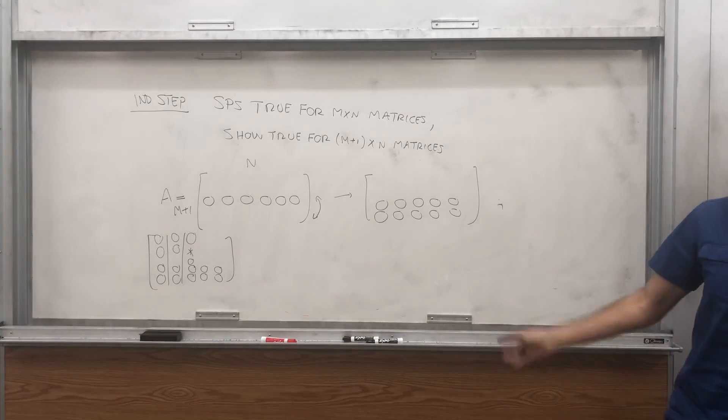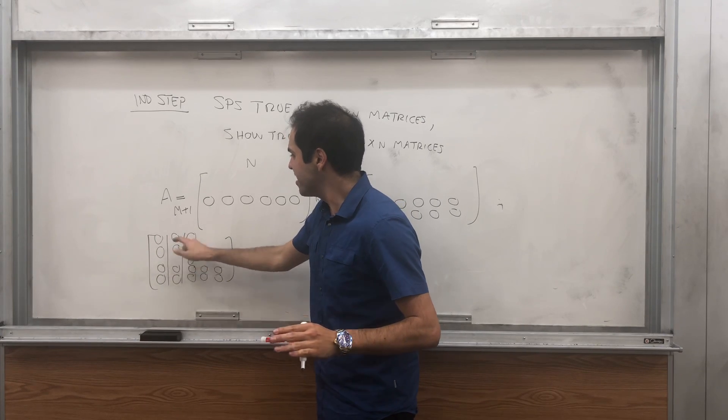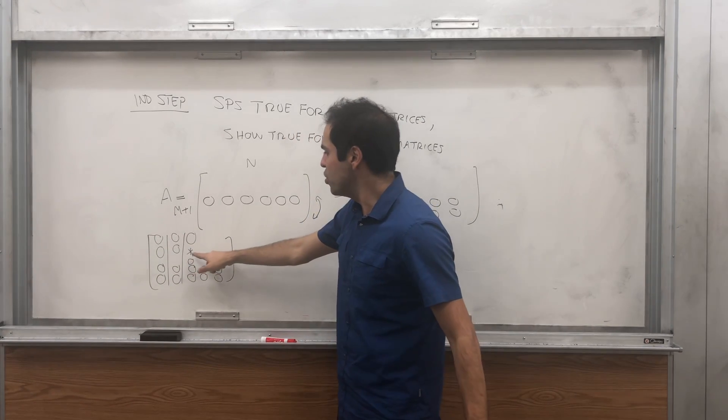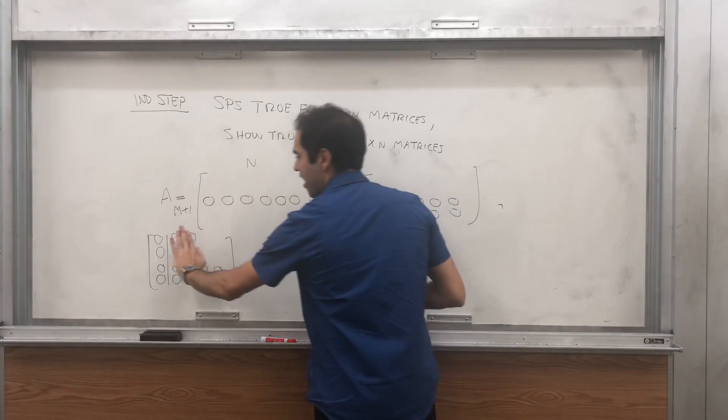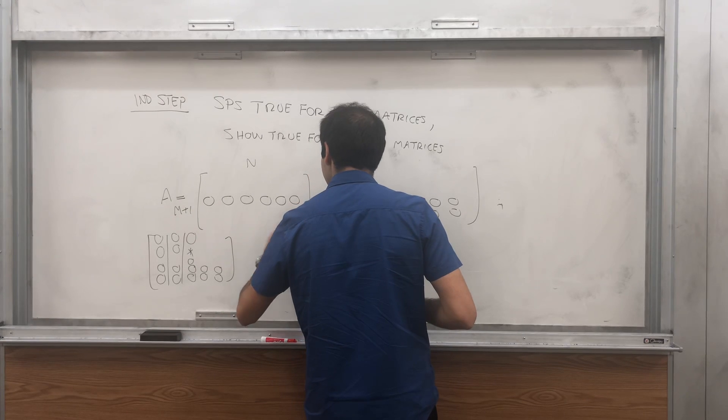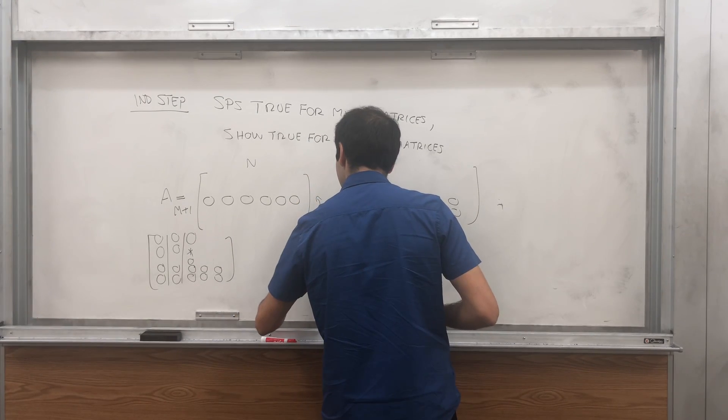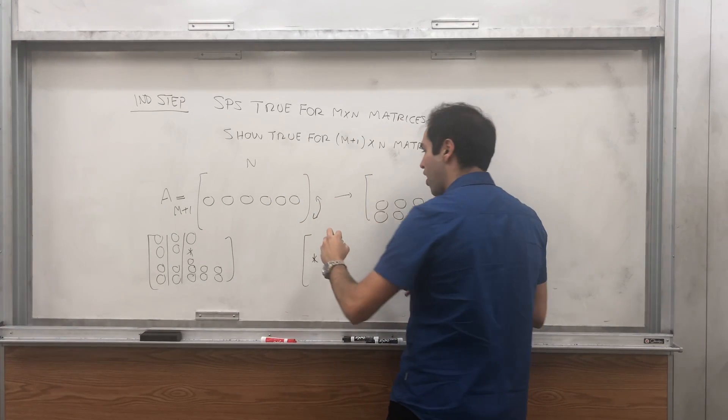And without loss of generality, so everything here works with zero columns, but assume that this non-zero entry now is in the first column. I'll just repeat the proof with everything included.